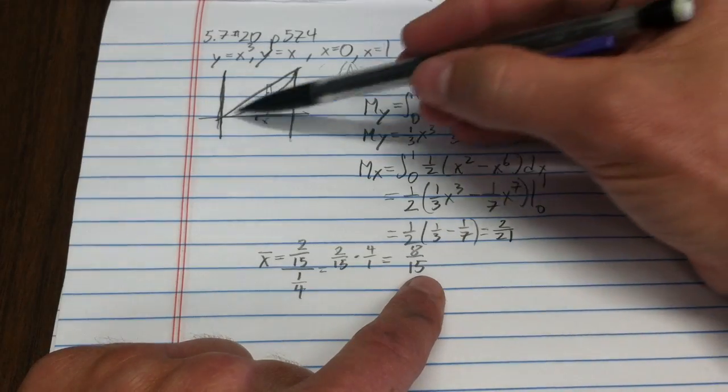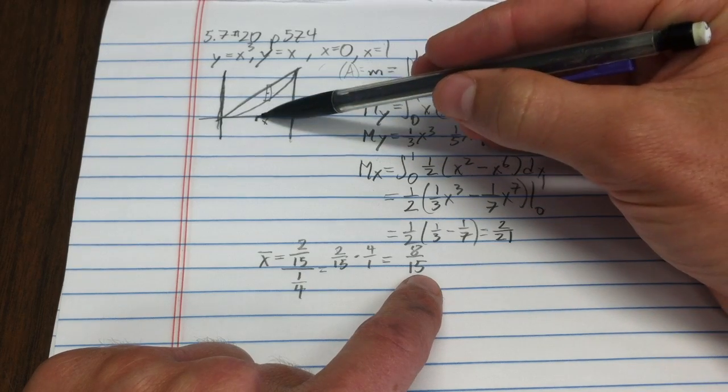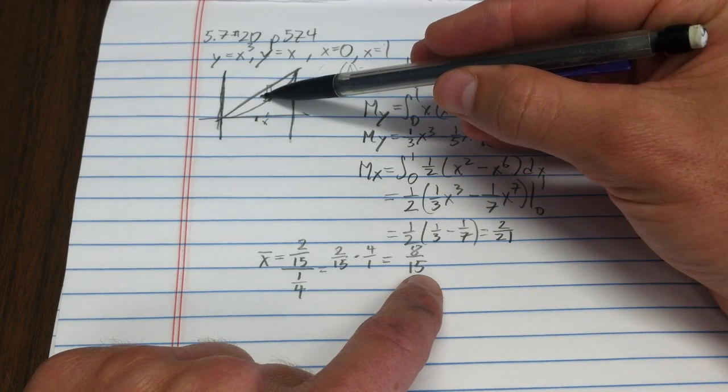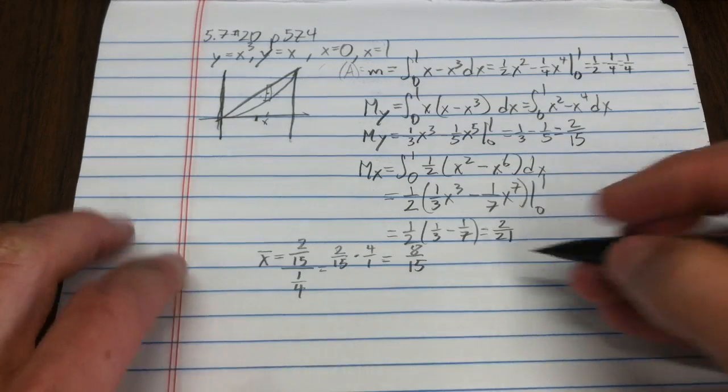Notice what that means in practice in the x-direction. Seven and a half fifteenths would be dead middle. It says the center of mass in the x-direction is ever so slightly past half, but very close to half.